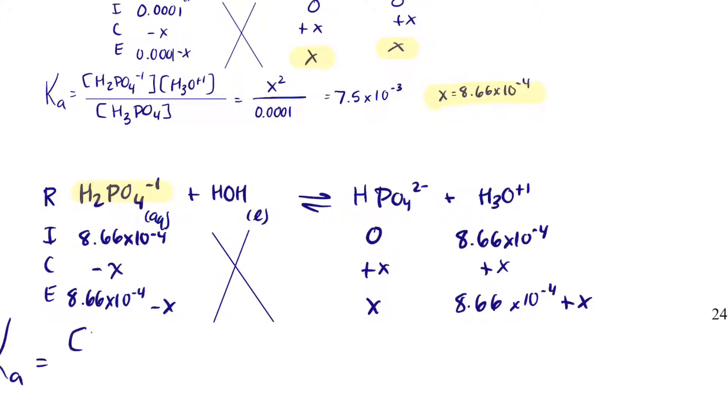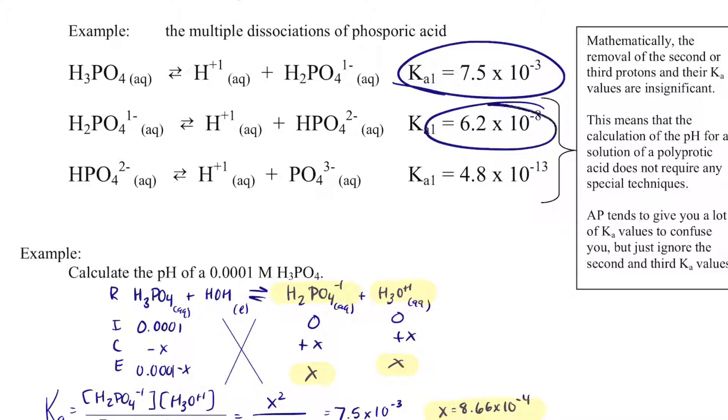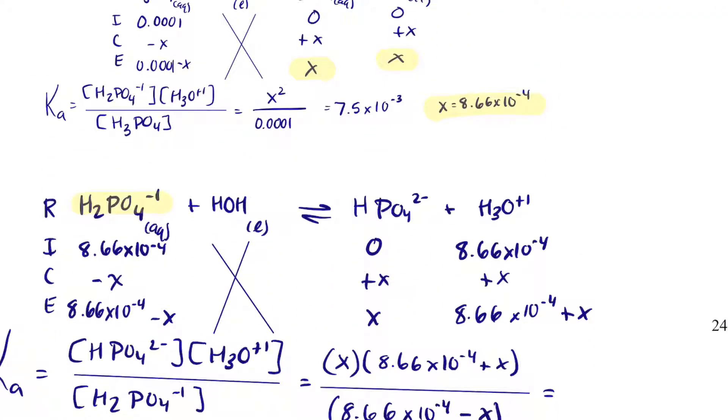And so I'll get 8.66 times 10 to the minus 4 minus x. I get x and I get 8.66 times 10 to the minus 4 plus x. I can write a Ka expression. Ka equals HPO4 2 minus times H3O plus 1 divided by H2PO4 minus 1. So this equals x times 8.66 times 10 to the minus 4 plus x divided by 8.66 times 10 to the minus 4 minus x. And that all equals Ka for this second dissociation, so that's 6.2 times 10 to the minus 8.